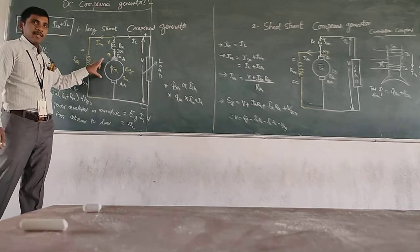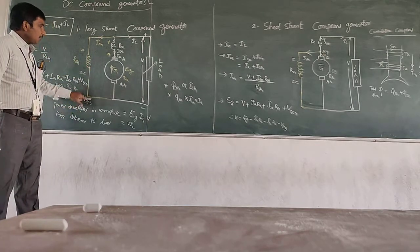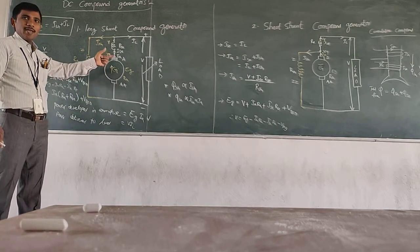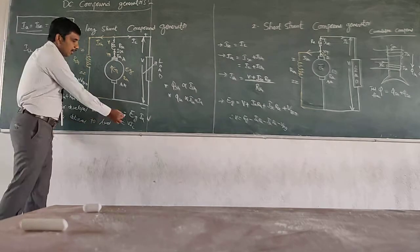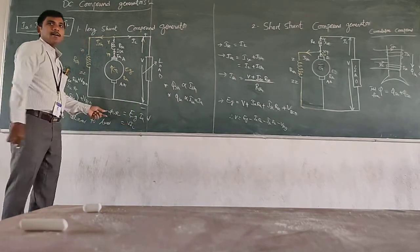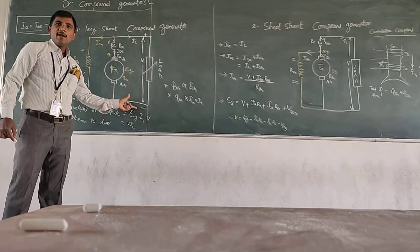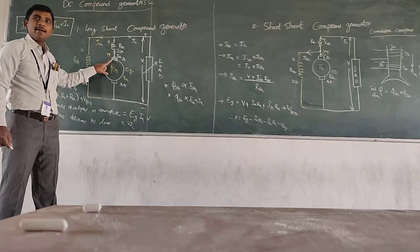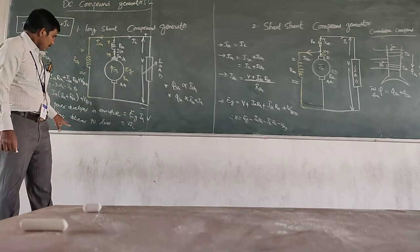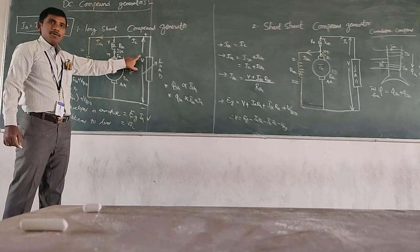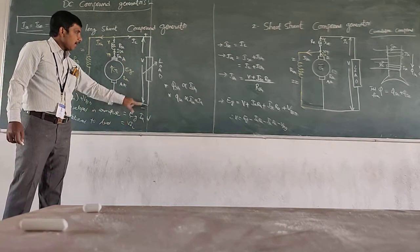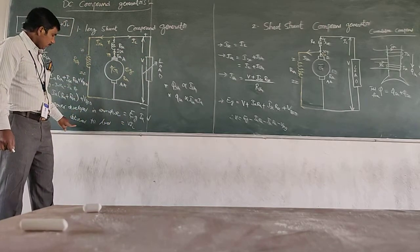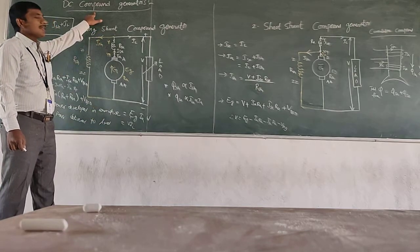Power developed in the armature equals Eg multiplied by Ia. Note: in the case of DC motors, Eb multiplied by Ia gives total mechanical power developed. For generators, Eg multiplied by Ia is the power developed. Power delivered to load equals V multiplied by IL, where IL is the total current passing through the load — that gives power delivered to the load in a DC compound generator.